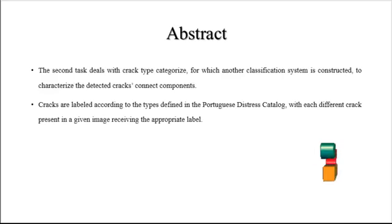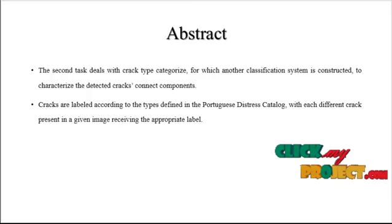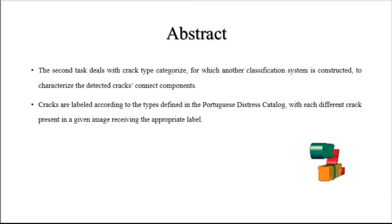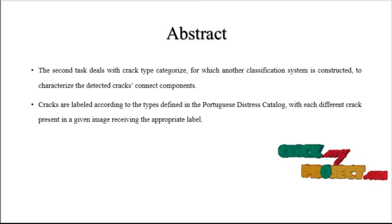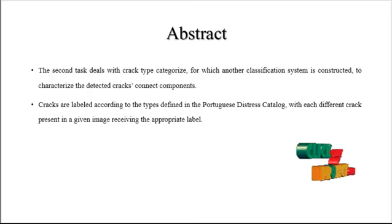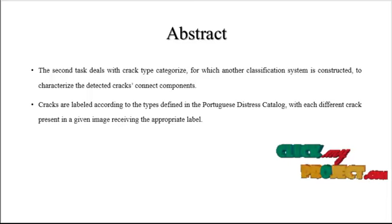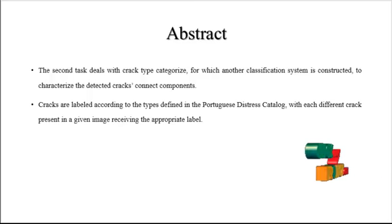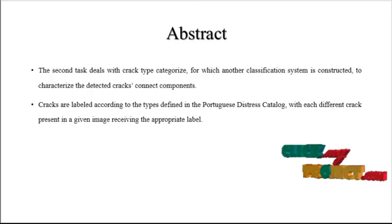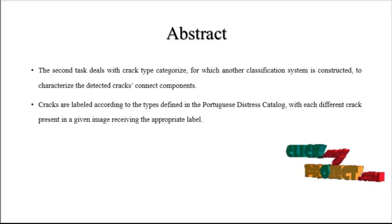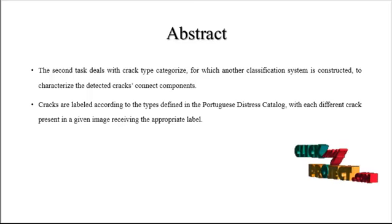The second part of the work deals with crack type classification, otherwise known as crack type categorization. Another classification system is constructed to categorize the detected crack into connected components by calculating which type of crack is present. Cracks are labeled according to types defined in a catalog — for example, a horizontal crack is labeled as 1 and a vertical crack is labeled as 2 — and the label type is then predicted.